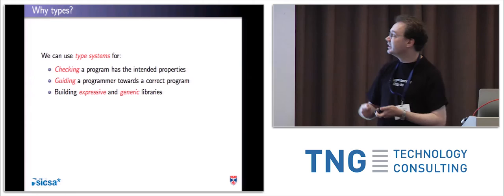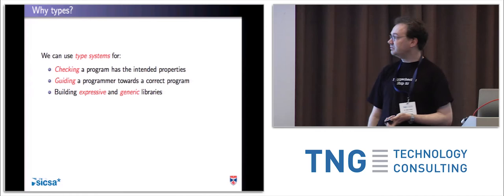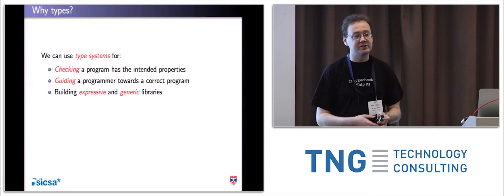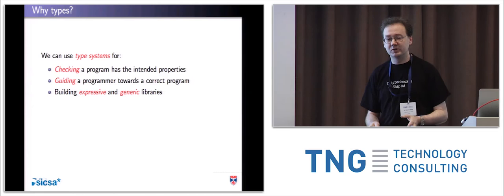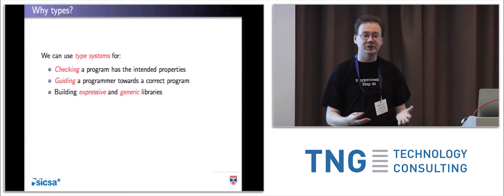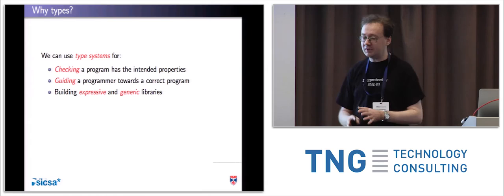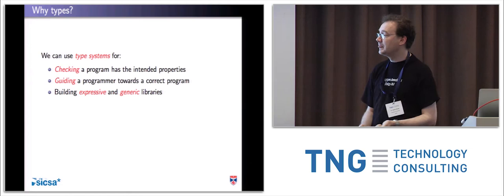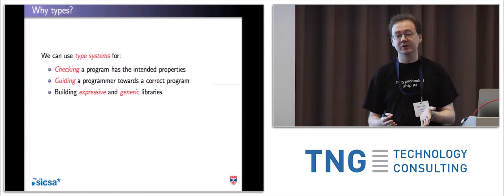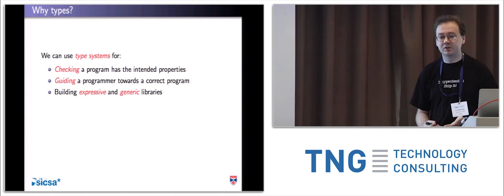So the second thing type systems are good for is guiding a programmer towards a correct program. Finally, the more expressive your type system, the more expressive and generic your libraries can be. Application developers probably don't want to think in too much depth about all the complicated trickery in library types — they just want to use it and get applications running. So as library developers, we'd like to make those libraries as generic, usable, and expressive as possible to make the application developer's job much easier. The stronger your type system, the better chance you have of doing that.